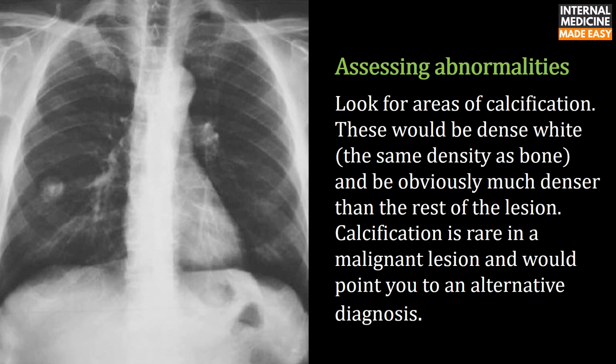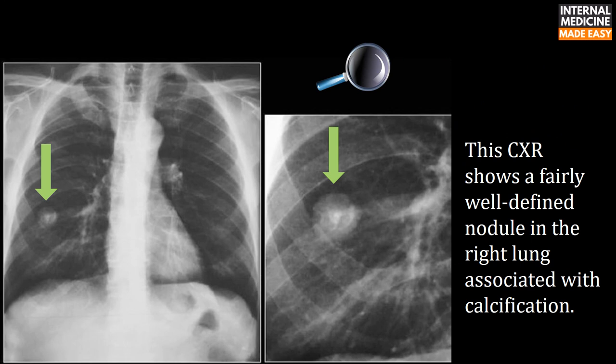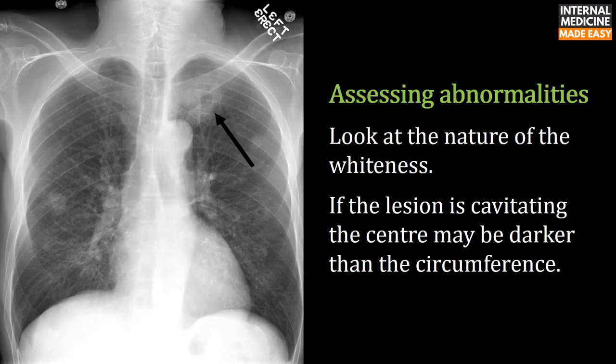Look for areas of calcification. These would be dense white, the same density as bone, and obviously much denser than the rest of the lesion. Calcification is rare in a malignant lesion and would point you to an alternative diagnosis. This chest X-ray shows a fairly well-defined nodule in the right lung associated with calcification.